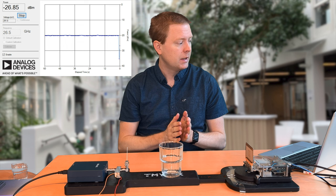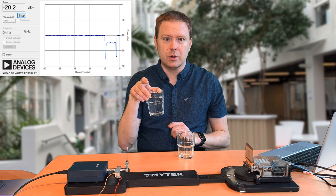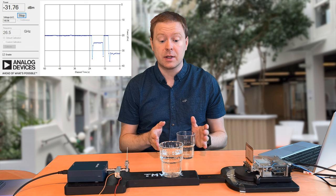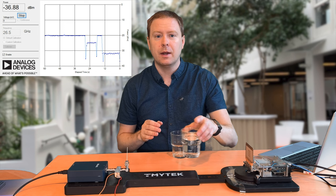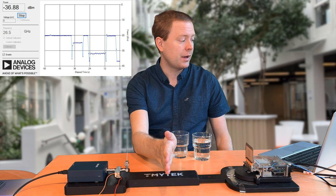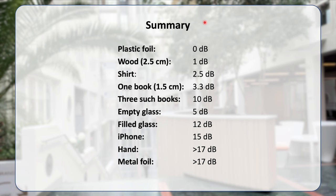With an empty glass between the transmitter and receiver, we go from about minus 20 to minus 25 dBm — roughly 5 dB loss. With a water-filled glass, we lose more like 11 to 12 dB, so the water itself is blocking the signal in addition to the glass. Finally, if I block the signal with my hand, we are down at minus 36.88 dBm — meaning none of the transmitted signal appears to reach the receiver.